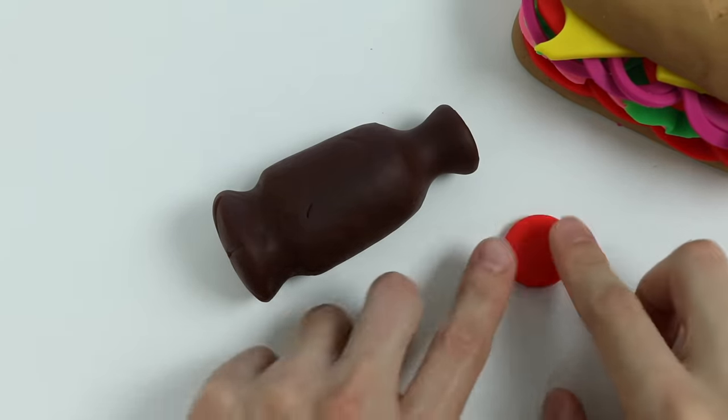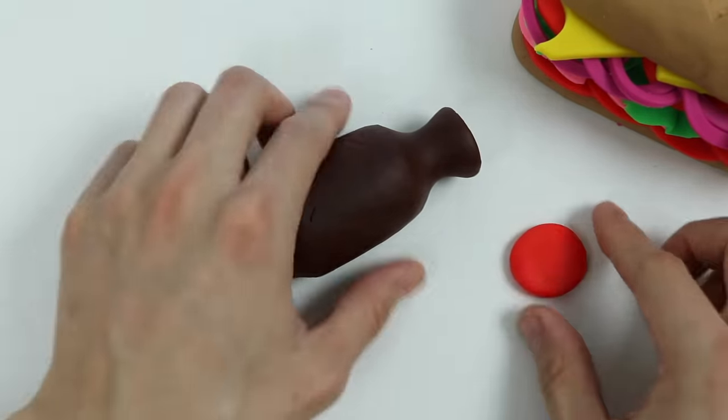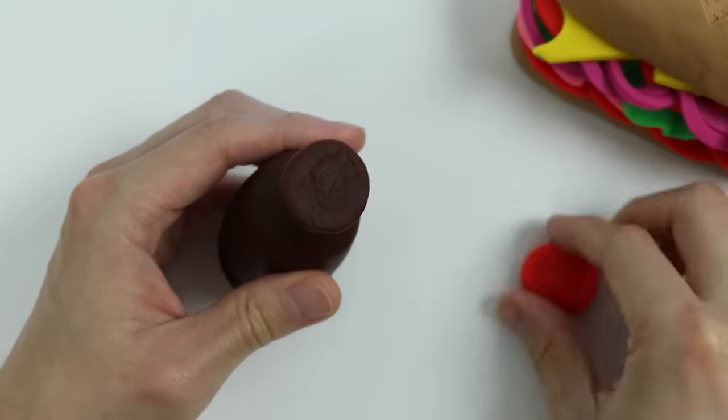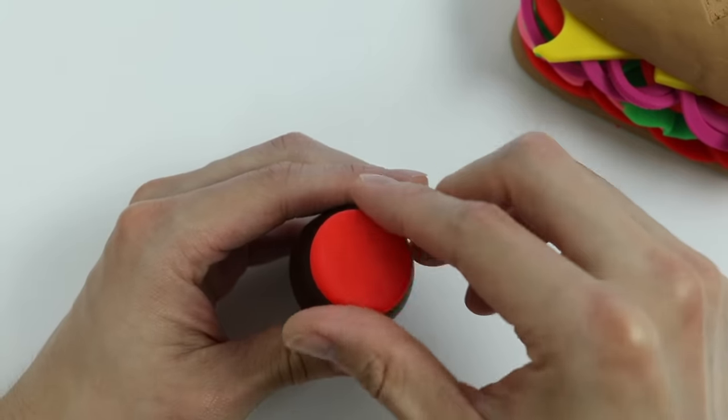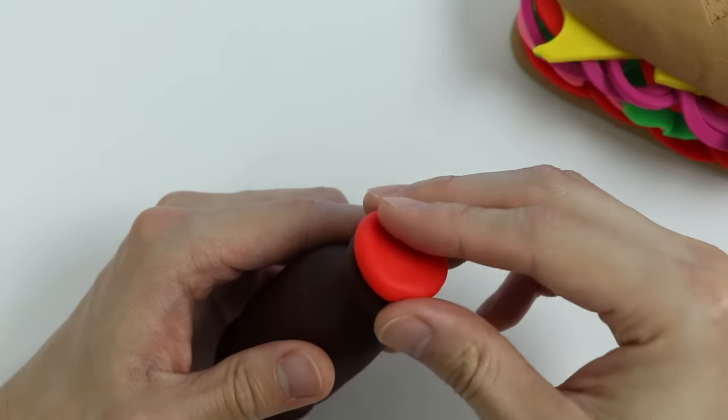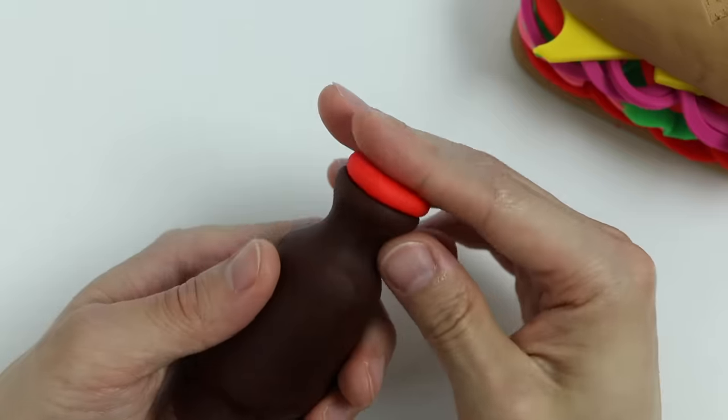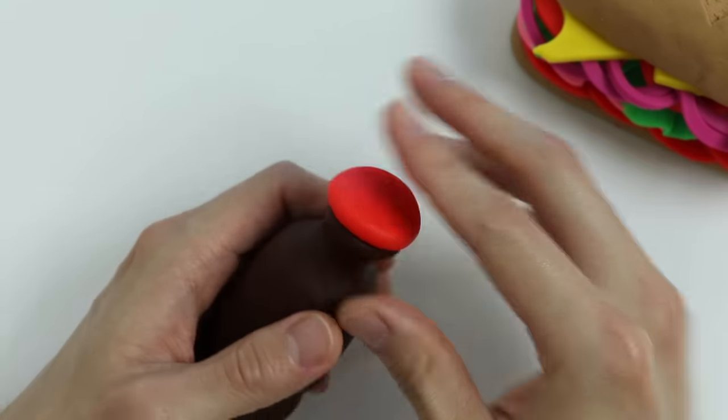Use your fingers to flatten the cap. Now let's put the cap on top of the bottle and use a tool to make lines to seal the bottle.